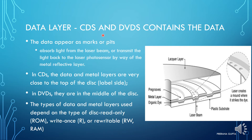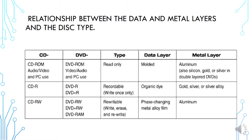The data layer is the second component. All CDs and DVDs have such layers, and this layer actually stores the data. Data appears as marks or pits — pits absorb light from the laser beam, or transmit light back to the laser photo sensor via the metal reflective layer. In CDs, the data and metal layers are close to the top of the disc, while in DVDs they are in the middle. The type of data and metal layers used depends on the disc type: read-only, write-once, or rewriteable.